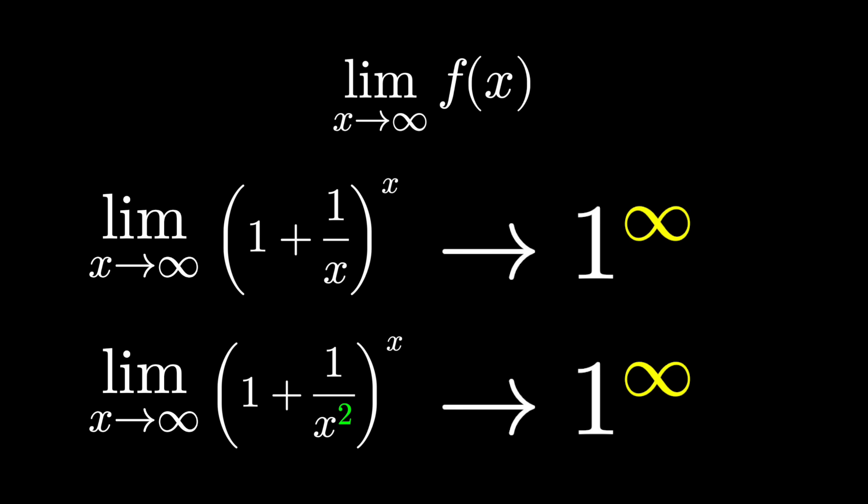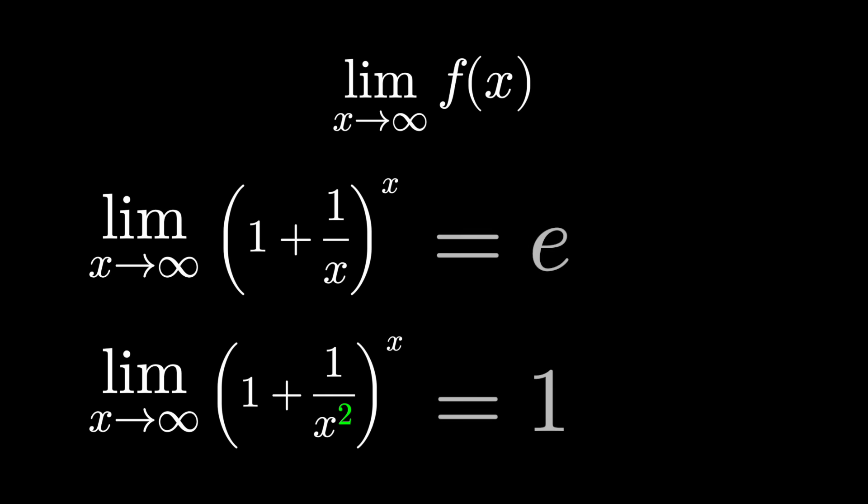These expressions appear to approach 1 to the infinity power. Yet computing these limits using calculus techniques reveal their true answers, which are both different. This is why, when we discuss limits, 1 to the infinity is considered an indeterminate form — we can't determine its exact value without further inspection.